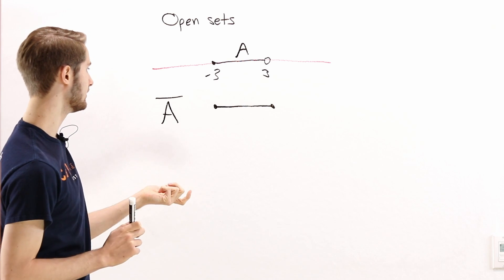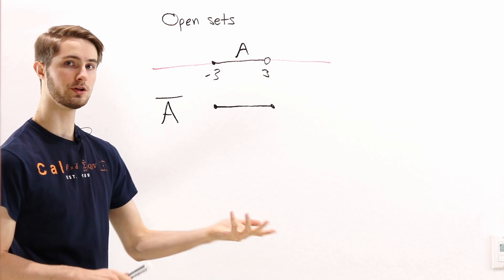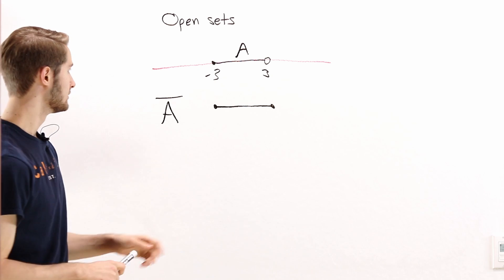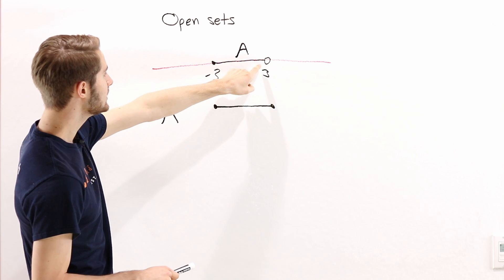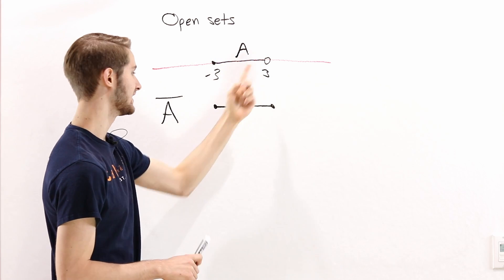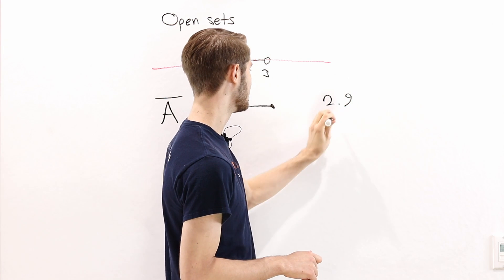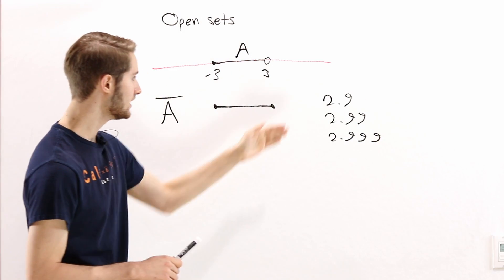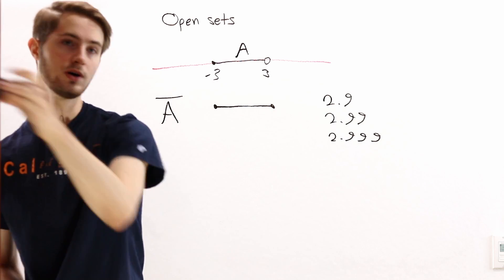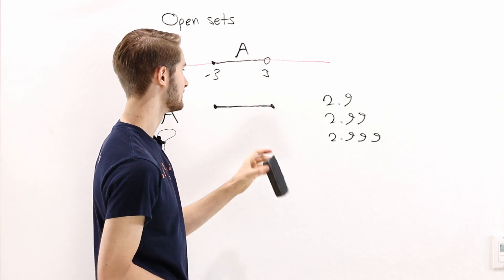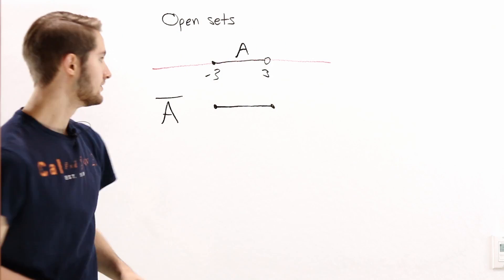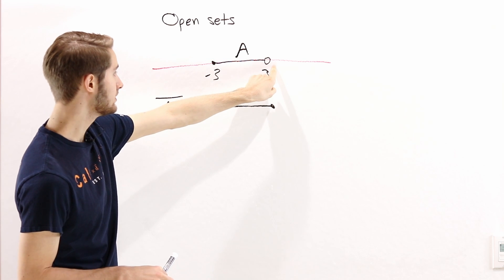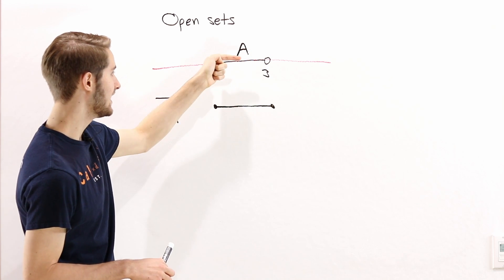The question now is how do we figure out which points are on the boundary of A so that we can include them when we take the closure? Consider the point positive three — it isn't in the set, but if we look at points nearby, we can get really, really close to three by taking points inside the set: 2.9, 2.99, 2.999, and so on. All of these points are in set A, and they're getting really, really close to three. We can get as close as we want by taking numbers just to the left inside our set A.